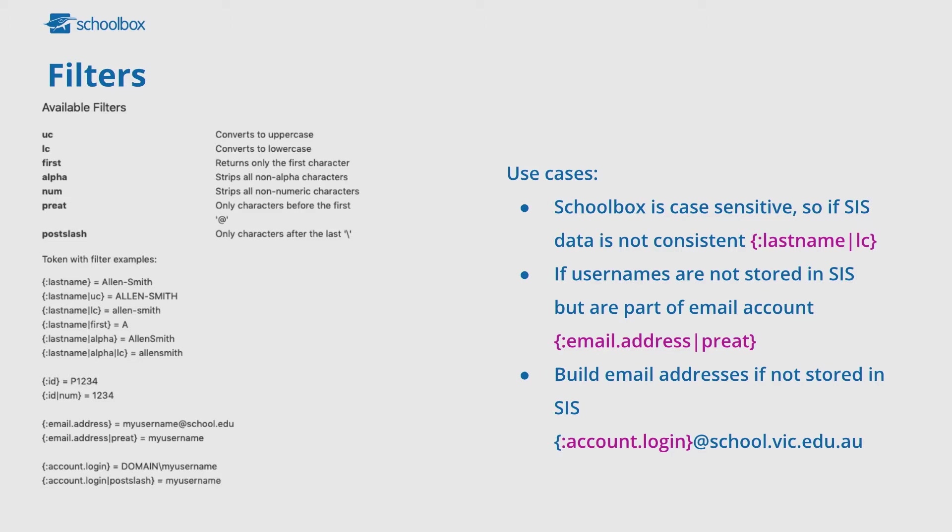A lot of the time you may not necessarily have your student username stored in your SIS, but you will have their email addresses. So what you can do is break that into the pieces you need and form their username in Schoolbox — that's where something like 'pre-at' comes into play. The reverse is you may need to form an email address: you can actually add plain text after a token. So you can grab the token of first name, dot, token of last name, then write the at-sign and 'school.vic.edu.au' and form that email address within Schoolbox, without needing to add the field into your SIS.